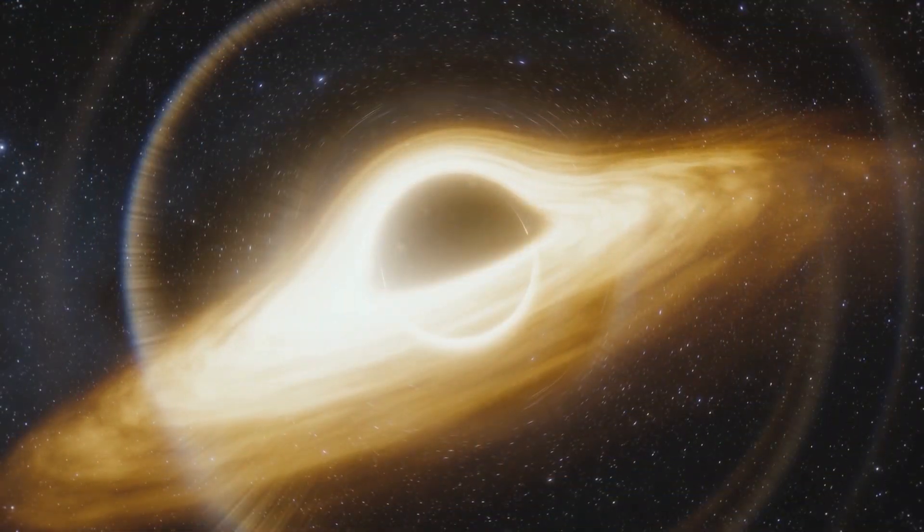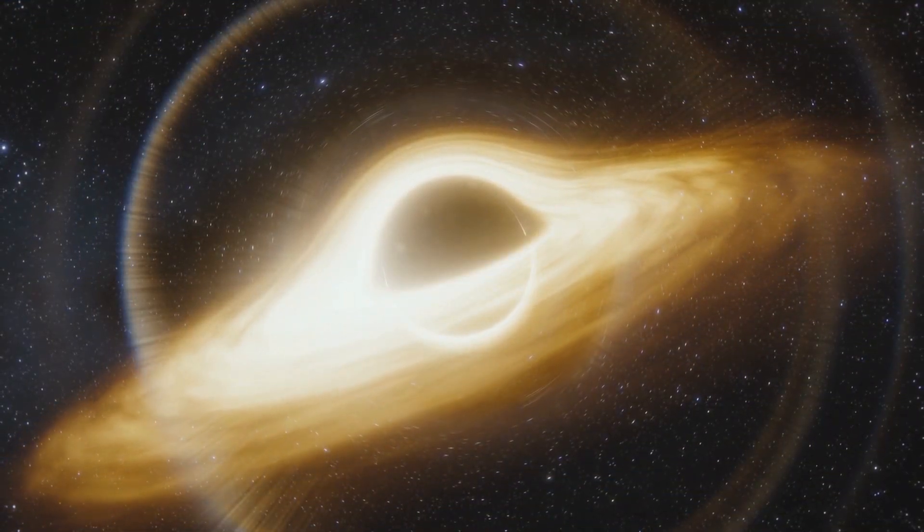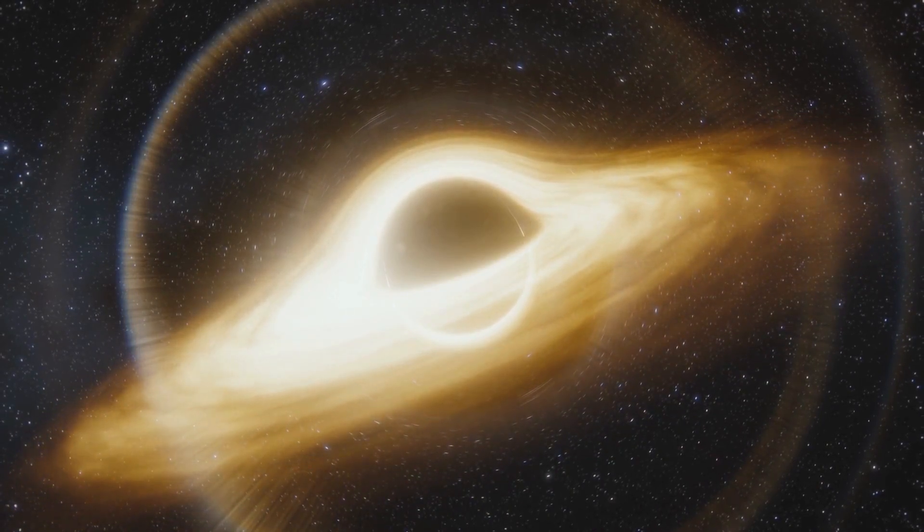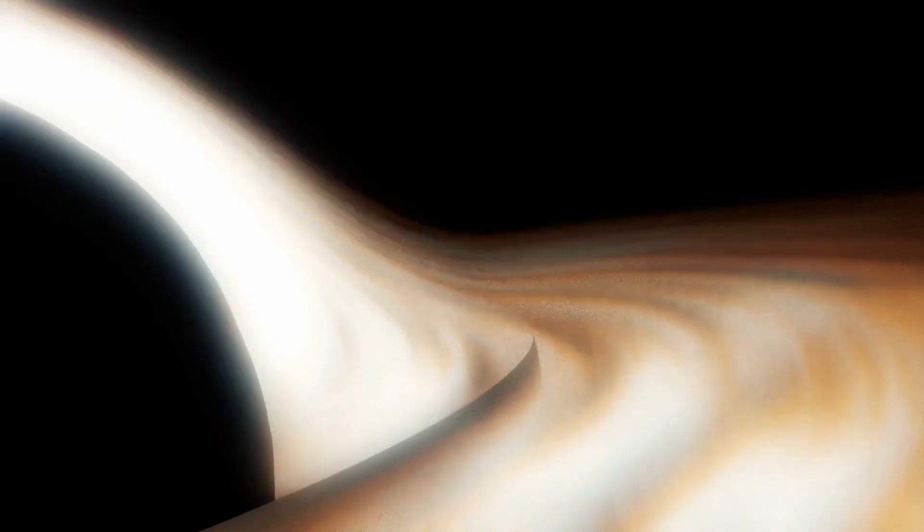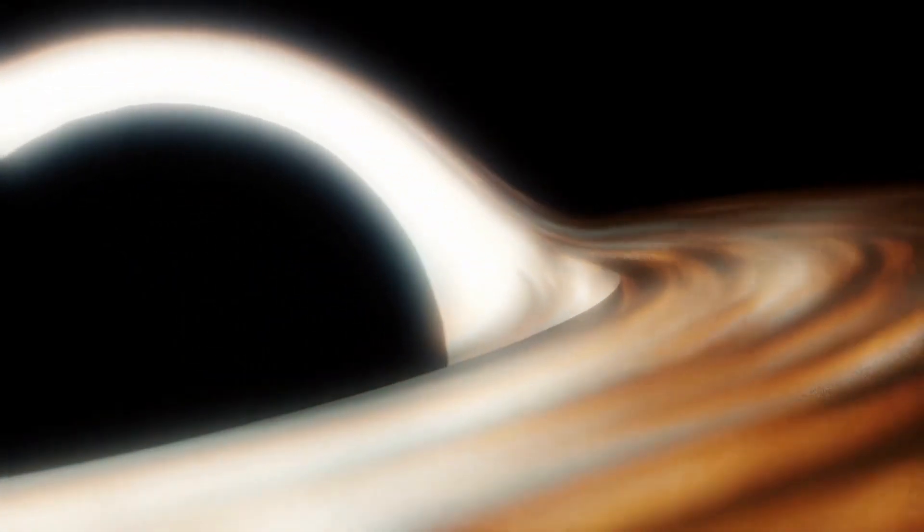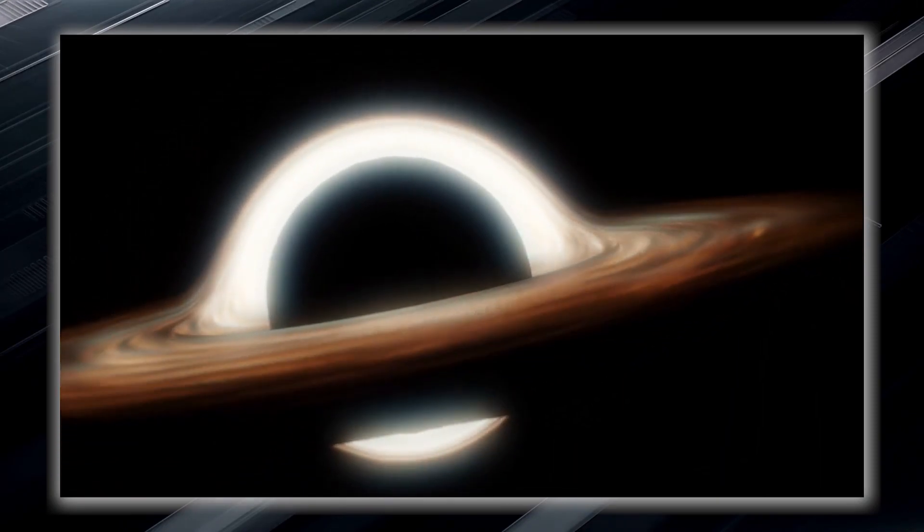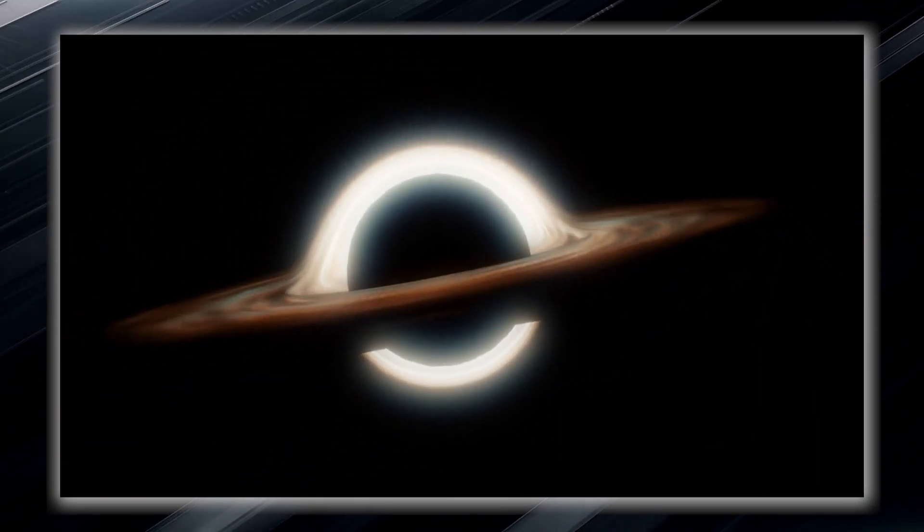This is where things become truly extraordinary. The gravitational pull near a black hole is so incredibly strong that it creates what is known as an event horizon. The event horizon is not a physical barrier, but rather a region where space gradually bends. It is an invisible boundary or point of no return.